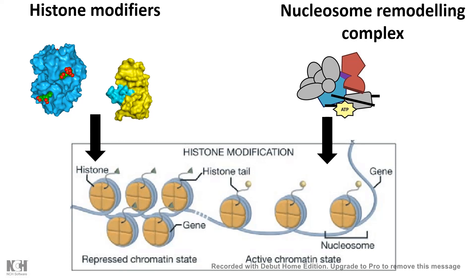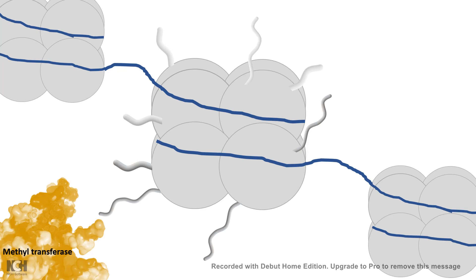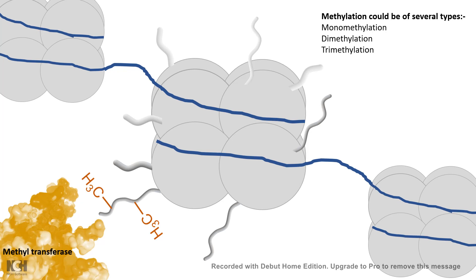Now let's look at a different type of modification: methylation, which is brought about by methyltransferase, which adds a methyl group onto the N-terminal tail of the histone at lysine or arginine residues. Methylation can be of several types: monomethylation, dimethylation, or trimethylation. The amount of time the methyltransferase engages with a particular residue determines what type of methylation profile is achieved. So the time of interaction of these modifiers is also implicated in terms of the gene expression profile.